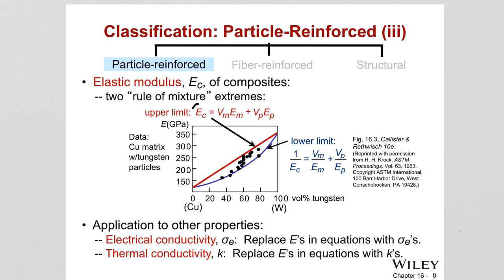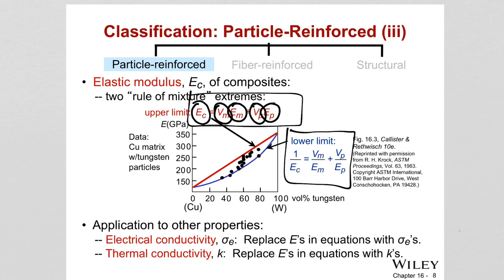The modulus of the composite EC depends, in the upper bound, on the volume fractions of each constituent: volume fraction of the matrix times modulus of the matrix, plus volume fraction of the particle times elastic modulus of the particle. This forms the upper limit shown in red. The lower limit equation is: 1/EC = volume fraction of the matrix divided by modulus of the matrix, plus volume fraction of the particle divided by modulus of the particle.